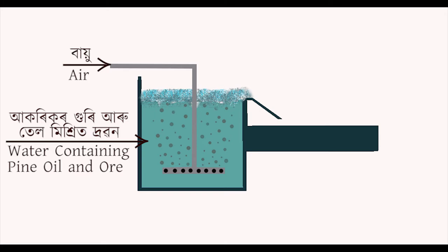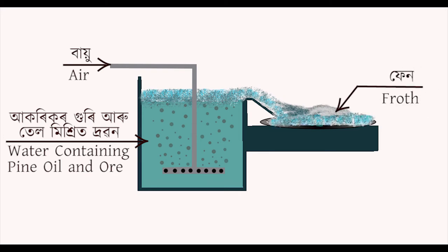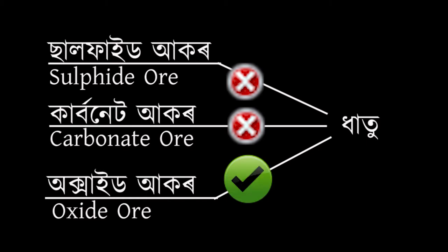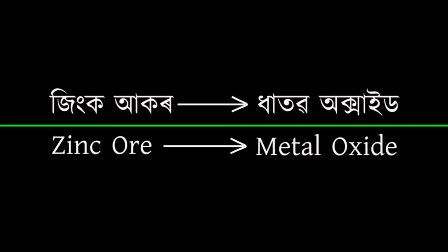The froth is then collected into another container. The metal residue and impurities, also called gang, settle down at the bottom of the container, which is removed with the help of an extraction tube. Extraction of metals from oxide ores is much easier than that of sulfide and carbonate ores.